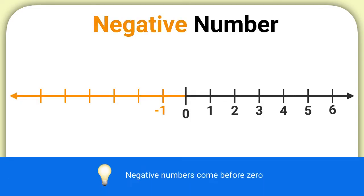Well, negative numbers are just the numbers before 0. You have negative 1, negative 2, negative 3, and so on.